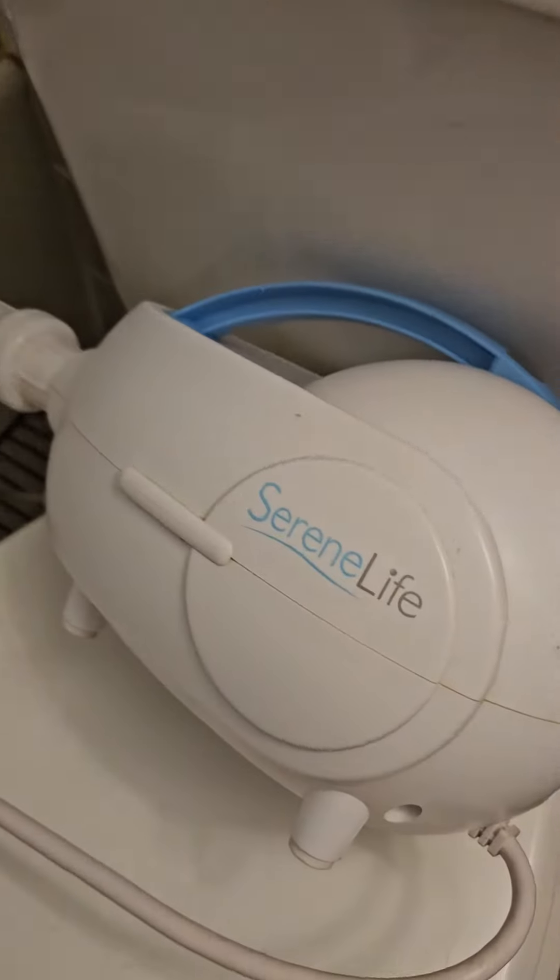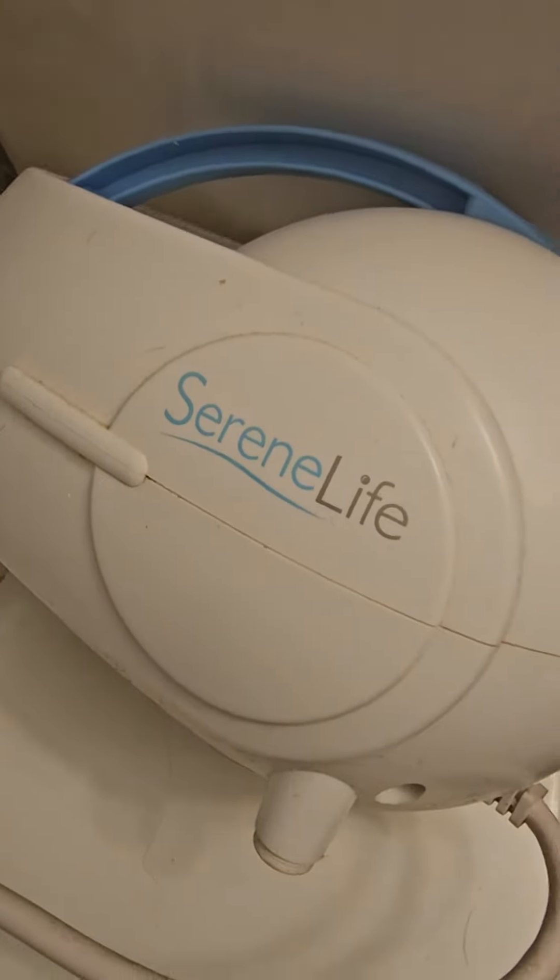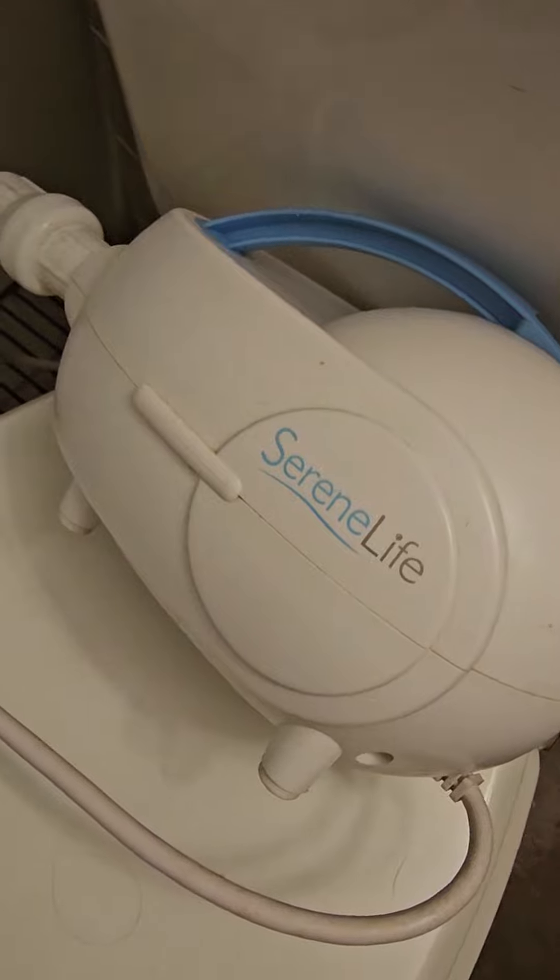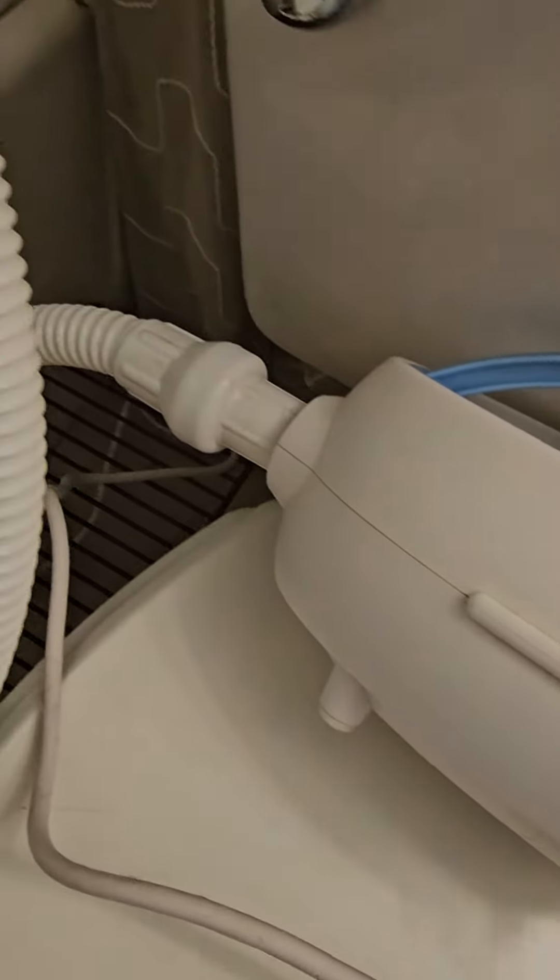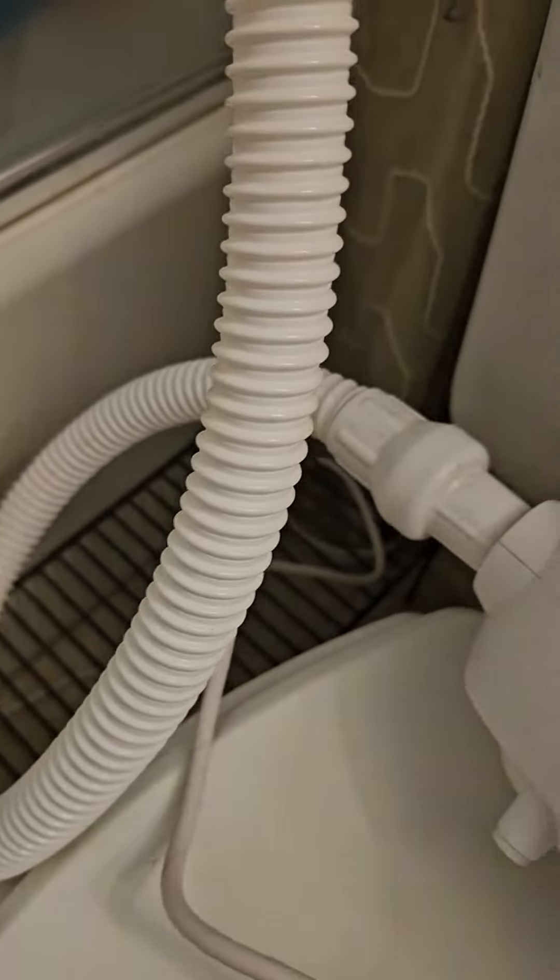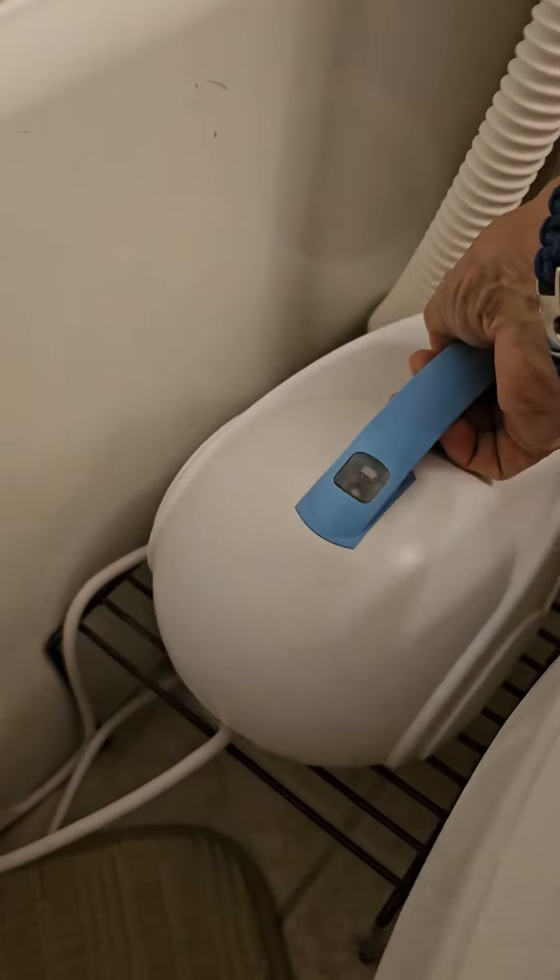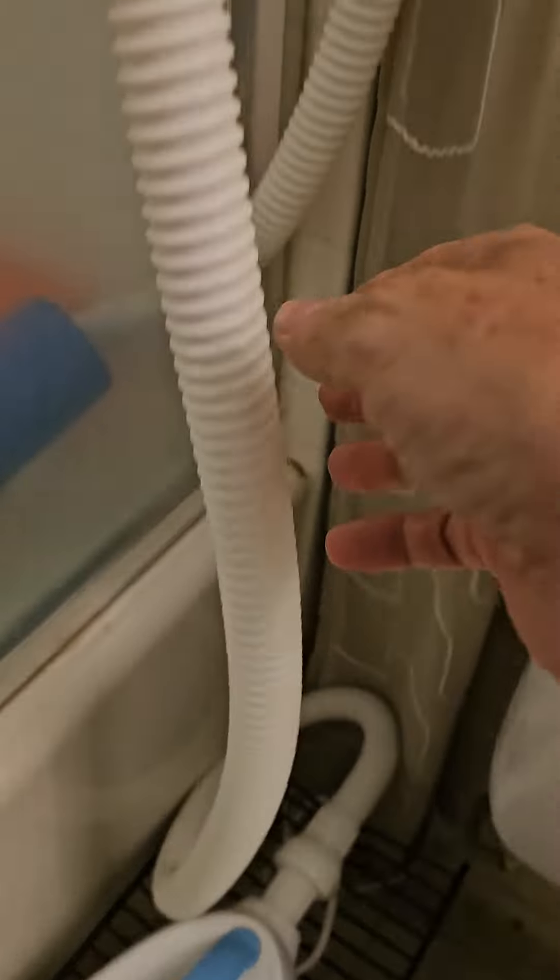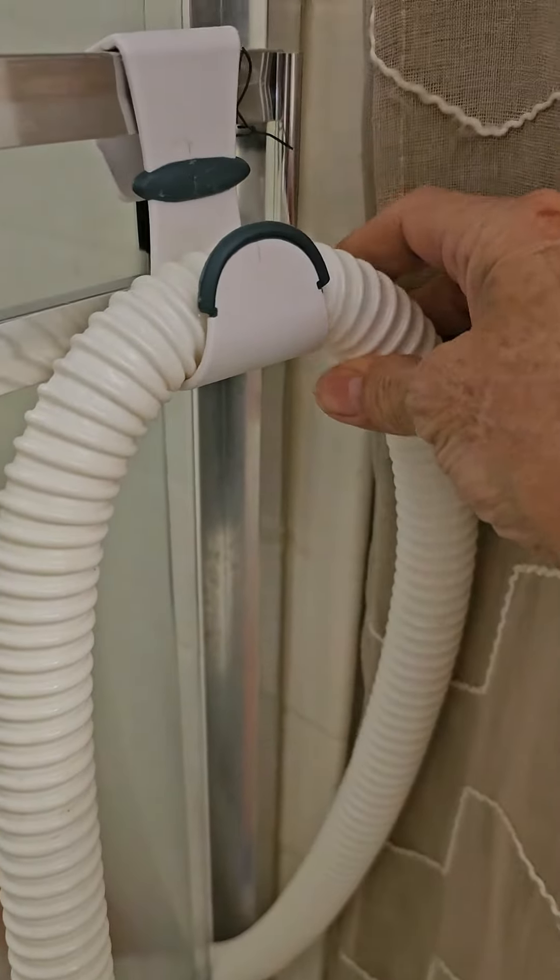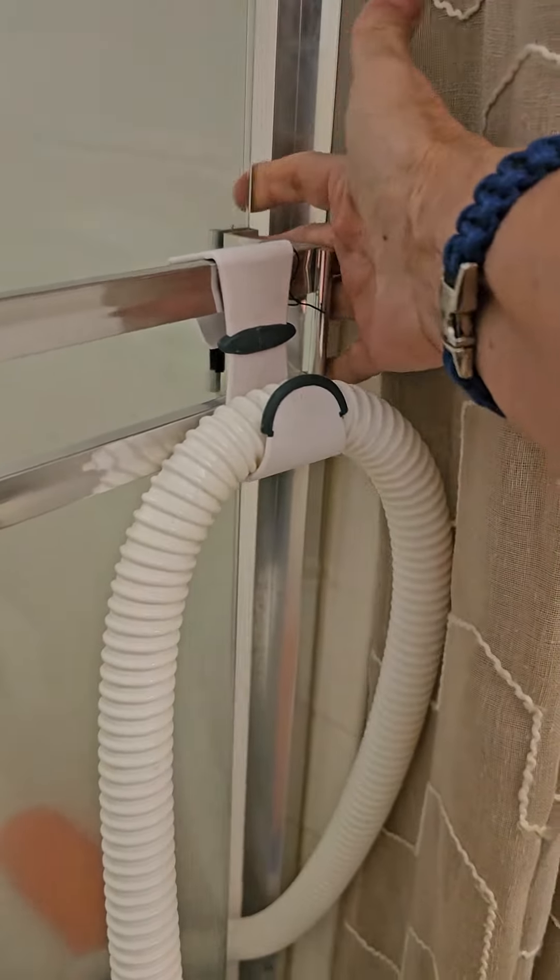Okay, how I made my own jet tub. I purchased one of these, I believe on Amazon. It was about 70 bucks, and I set it down here on a rack on the floor just in case water gets down there. I ran the hose up here and I have it hooked on the handle of the shower door.